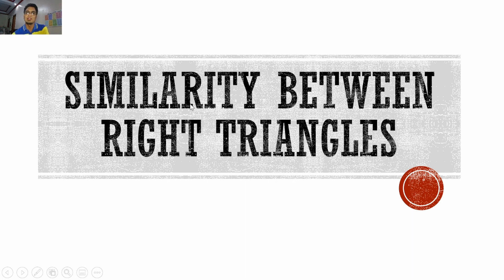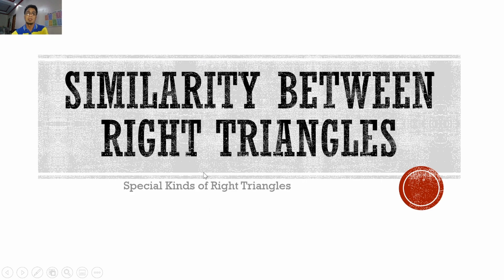Our topic for today is about similarity between right triangles. We are through with the AAA, SAS, and SSS similarity theorems. This time around, we will be talking about right triangles — and not only similarity between right triangles, we will also be talking about the special kinds of right triangles.